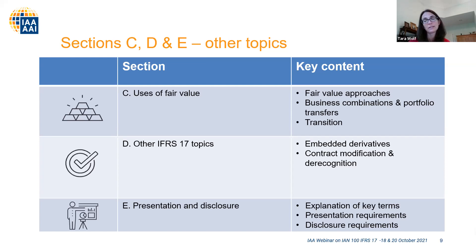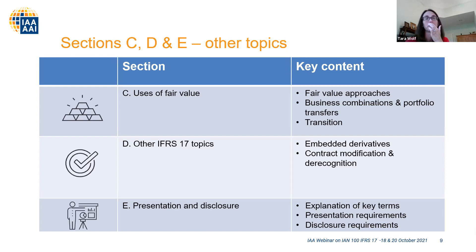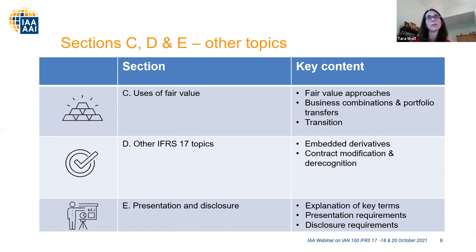Chapters thirteen and fourteen cover embedded derivatives and modification and de-recognition respectively. Regarding embedded derivatives, certain features considered embedded derivatives need to be bifurcated and valued separately. This has changed from prior valuation — if you were on US GAAP previously, there are changes that need to be considered. Chapter fourteen covers modification and de-recognition, and you get into a lot of this with reinsurance contracts. When reinsurance contracts are renegotiated, you've got to determine whether they should be de-recognized and re-recognized, or if it was within the contract boundary.